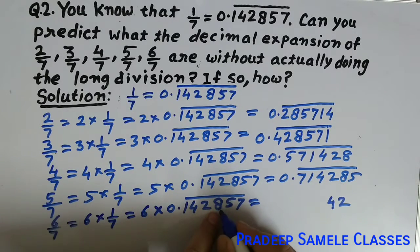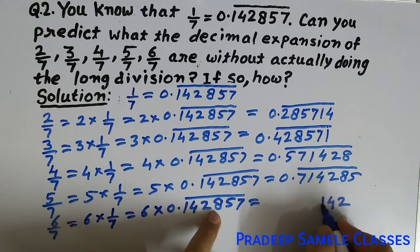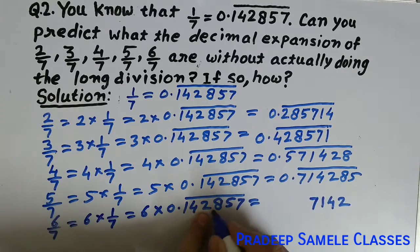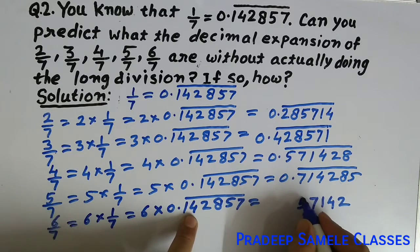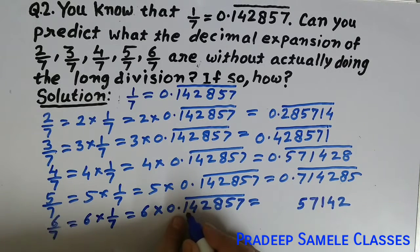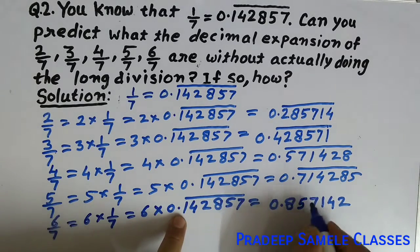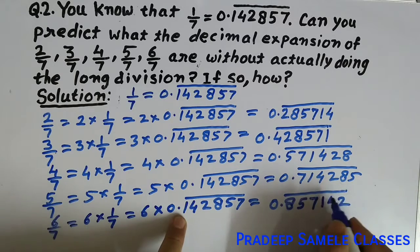6 times 5 is 30 plus 4 is 34, carry 3. 6 times 8 is 48 plus 3 is 51, carry 5. 6 times 2 is 12 plus 5 is 17, carry 1. 6 times 4 is 24 plus 1 is 25, carry 2. 6 times 1 is 6 plus 2 is 8. With decimal 0 and the bar on top.